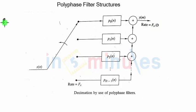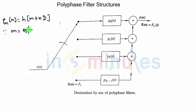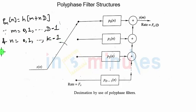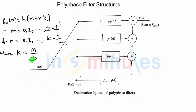What will be the impulse response in this case? P_m of n — each and every impulse response — will be H of m plus n*D this time, where small m will go from 0, 1 up to D minus 1, and N will go from 0, 1 up to K minus 1, where K still has the same definition. K will be nothing but the length of each and every filter, obtained as M divided by D, where M is the length of the original filter and capital D is the factor by which decimation is to be performed. M has to be a multiple of capital D. So this is the polyphase filter structure for interpolation and decimation using polyphase filters. This is also one way to improve computational efficiency.